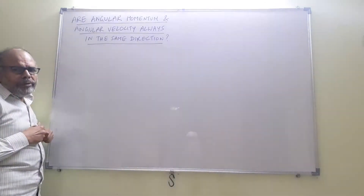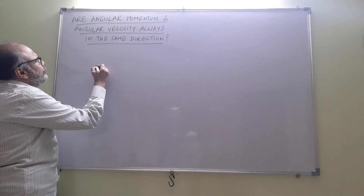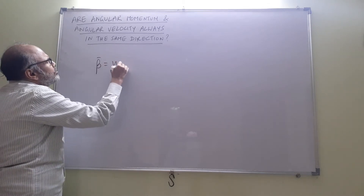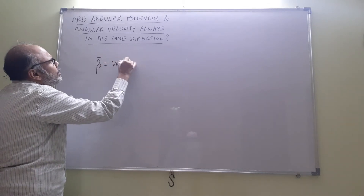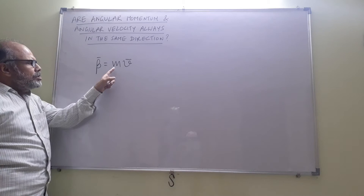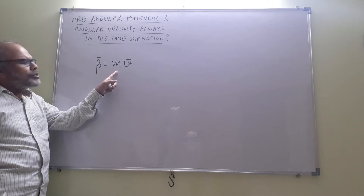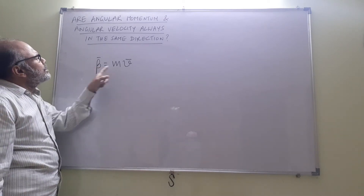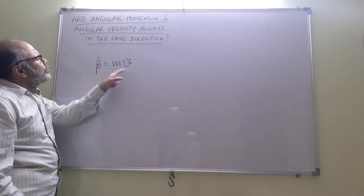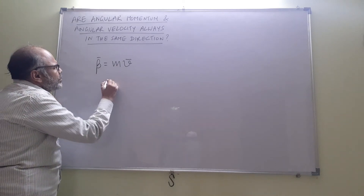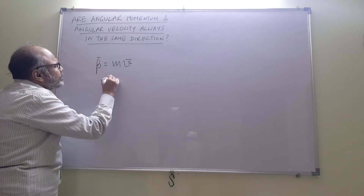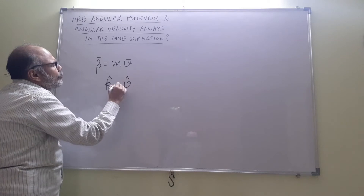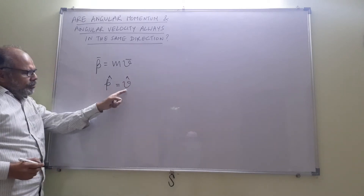Linear momentum of a particle p is defined as mass of the particle into velocity of the particle. Since mass is positive, velocity and momentum have to be in the same direction. Therefore we can say the unit vector along p and the unit vector along v must be equal.